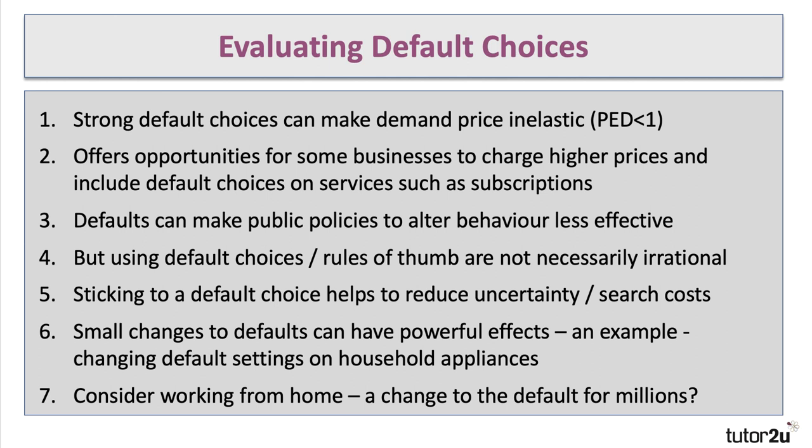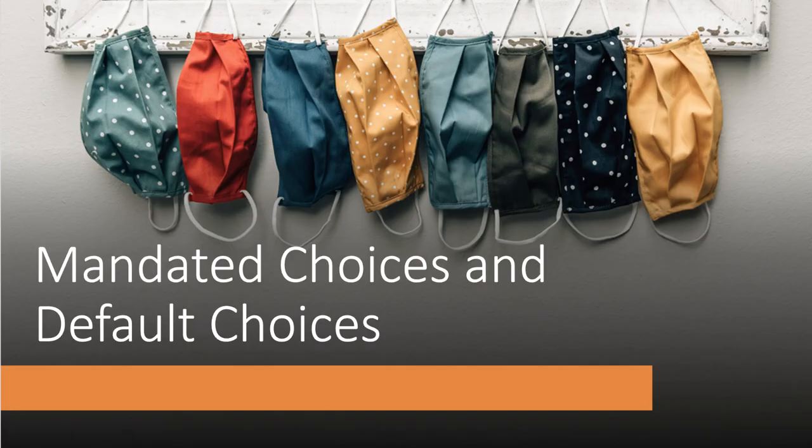Small changes can have big effects. Consider the effects of the pandemic — in particular, working from home. For many people that has now become perhaps two or three days a week, a change to their default behaviour, and that is going to have really significant effects on things like the market for commercial property, office space, and the demand for and revenues in mass public transport. Once the default changes, that can have quite powerful wider political, economic, and social effects. So there we go — a quick look at two important ideas in microeconomics related to behavioral economics: mandated choice and default choice.